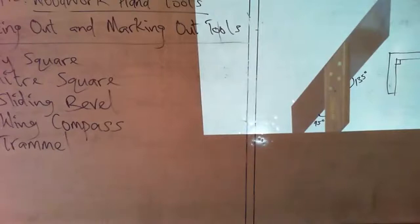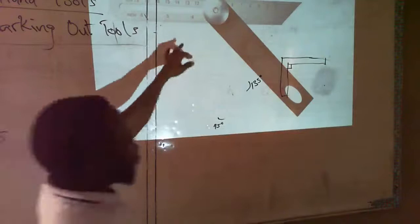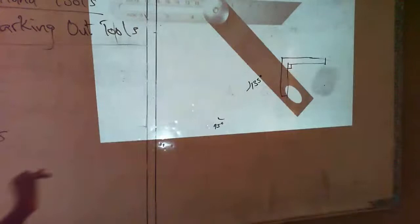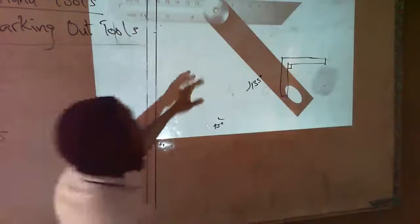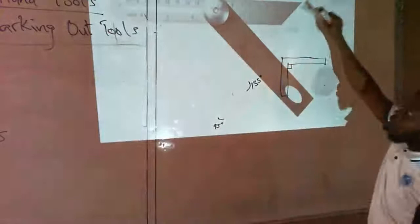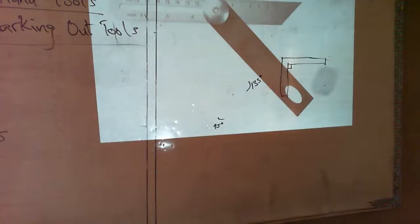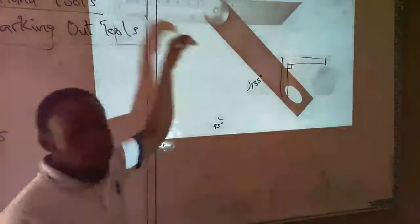The third tool is the sliding bevel, also called the adjustable bevel. It also has a stock and blade, just like the try square and mitre square. But the advantage is that it is not fixed — it is adjustable. There is a screw that allows you to adjust it to any angle you desire. So at whatever angle you want to mark out or set out on the woodwork, you can use the sliding bevel for that purpose.